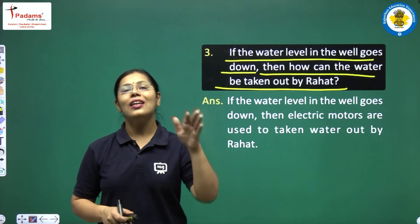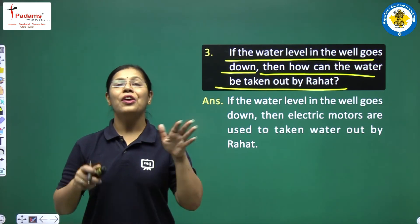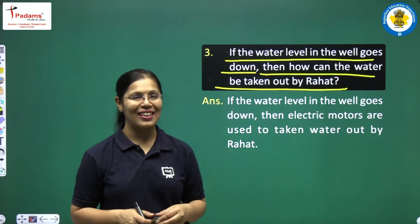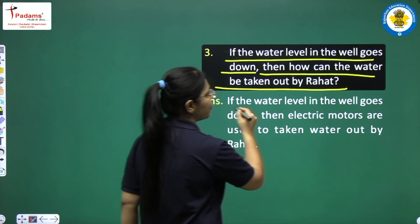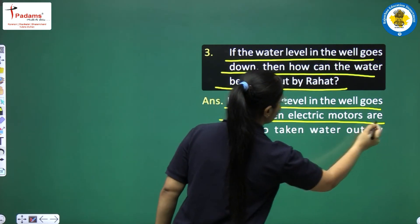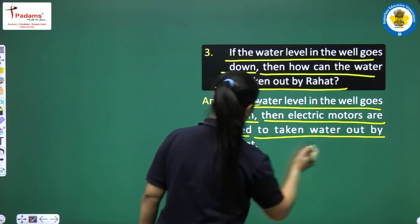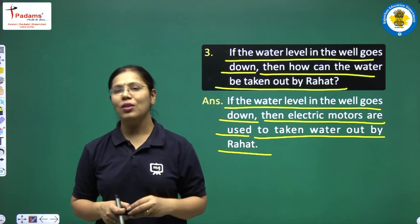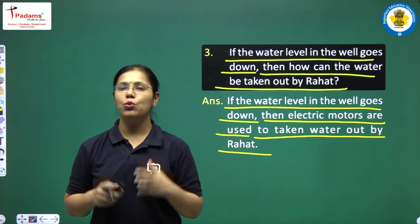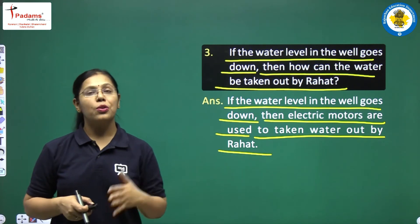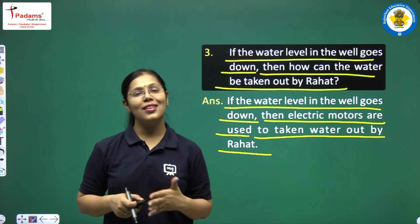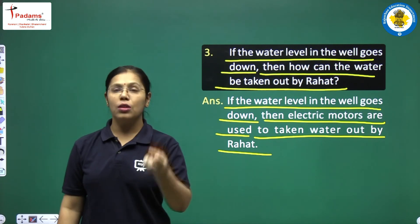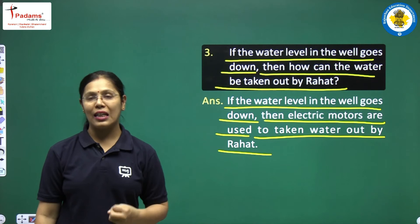If the water is very low in a well, then the Persian wheel can still be used with the help of some electric motors. You have to remember that if the water level goes very low in the well, we can still use the Persian wheel together with electric motors to draw water from the well.